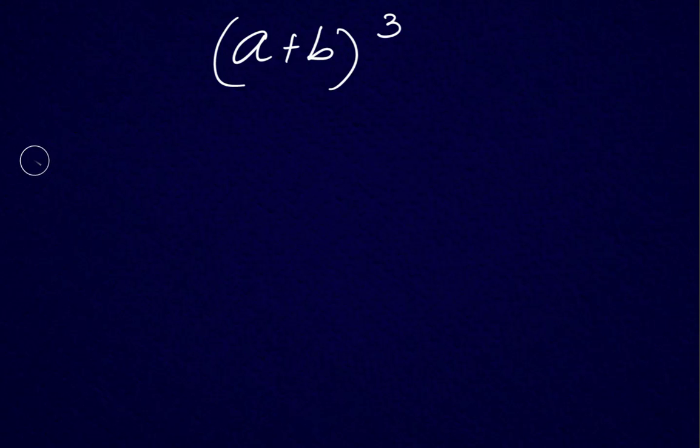This will be short. We know that a plus b cubed is equal to a plus b times a plus b squared.